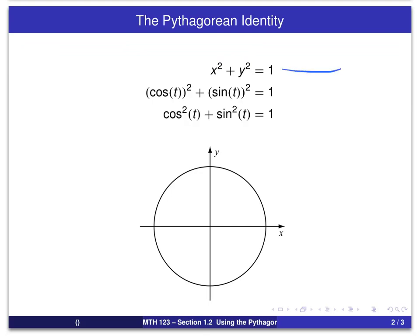And from our definitions, we know that x is equal to the cosine of t and y is equal to the sine of t. The value for t is the length of an arc as we wrap it around the unit circle in our usual conventions.